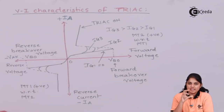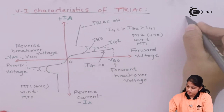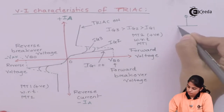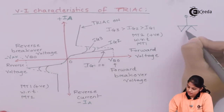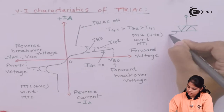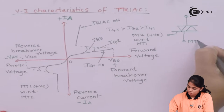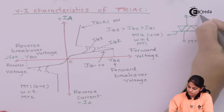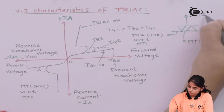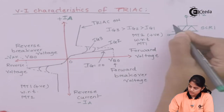I will draw the symbol where I have two SCRs connected in anti-parallel manner and one gate terminal. I have MT1 and MT2 — this is SCR1 and SCR2.